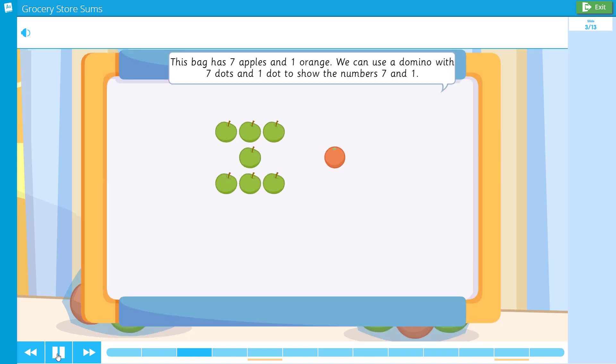This bag has seven apples and one orange. We can use a domino with seven dots and one dot to show the numbers seven and one. Eight is one more than seven, so seven plus one equals eight.